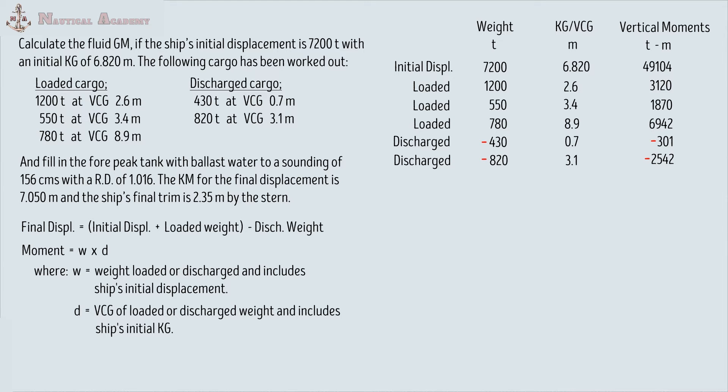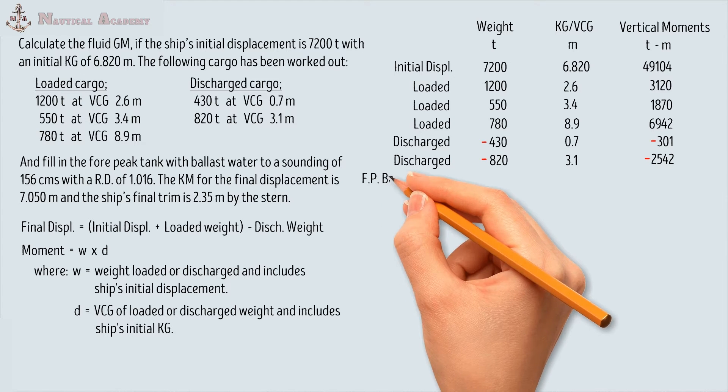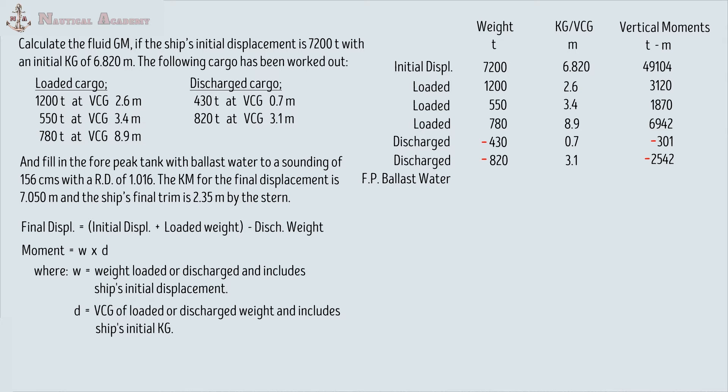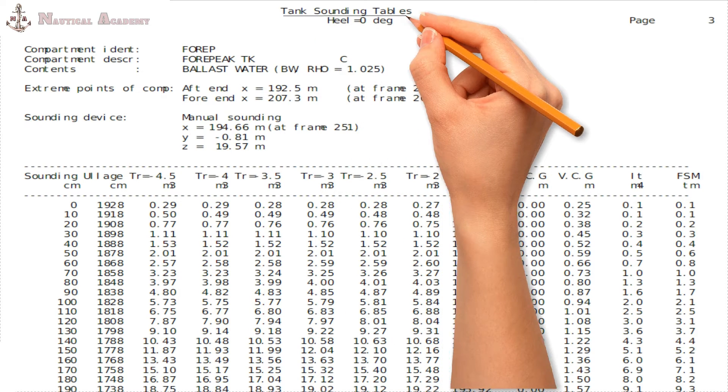Next, we will find the weight and VCG of the ballast water being filled into the 4-peak tank, and that includes the free surface moment since this is a slack tank or partially filled tank. We need the ship's sounding table to determine the following data. You can find the sounding table in the stability manual on board provided by the ship's builder. This is a sample of the ship's sounding table.